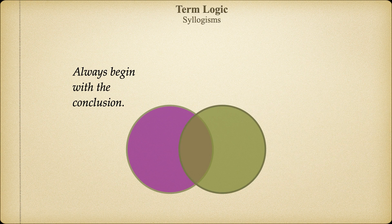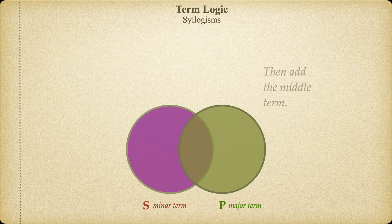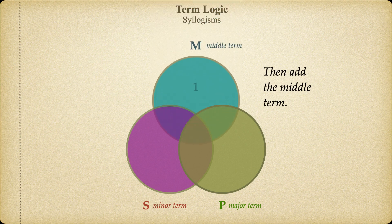A Venn diagram for a categorical syllogism will always have three overlapping circles. The two bottom circles will always represent the conclusion, which contains the minor and major terms. The circle representing the middle term will always go on top. Once we have our Venn diagram representing all three terms, we can simply fill in the information given in the two premises and see what follows.